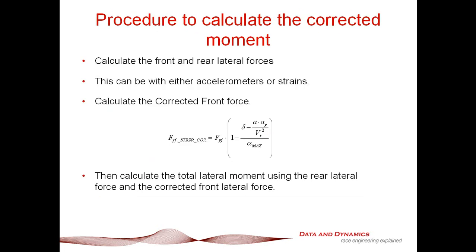So pretty much, let's go through our procedure to calculate the moment. First of all, you calculate the front and the rear lateral forces, whether you've got either strains fitted to the car, you've got log lateral forces from simulation, or you've got our front and rear lateral accelerometers, as we did last time. We then calculate the corrected front force, which is FYF 1 minus delta minus A times AY on VX squared divided by alpha max. Just as an aside, where that AY on VX squared comes from is that's an approximation of your rate. So we can really try and separate out what's going on with the side slip term. We then calculate the total lateral moment using the rear lateral force and this corrected FYF steer correction.